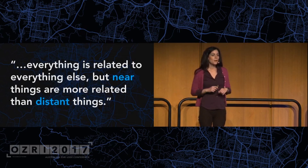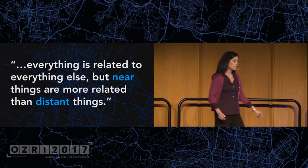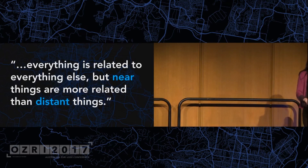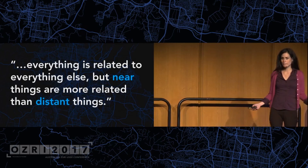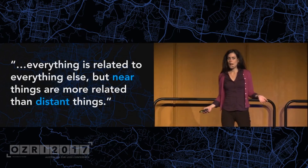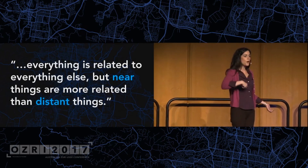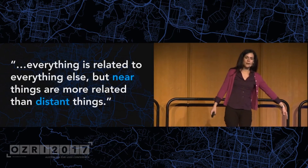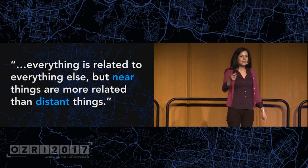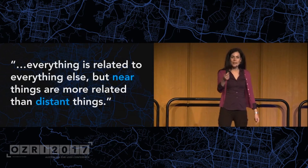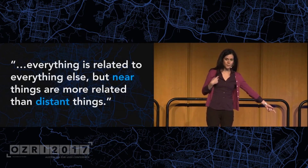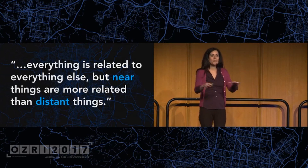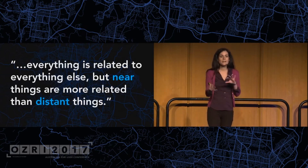With the space-time tools, we're extending the first law of geography — that everything is related to everything else, but near things are more related than distant things — to say that near and recent things are more related than distant things. There could have been a crime right here 10 years ago, and one that happened down the street yesterday. The one down the street is farther from me in space, but it's so much closer in time that it's probably more related to me than the one right here from 10 years ago. So now we can define proximity in both space and time.